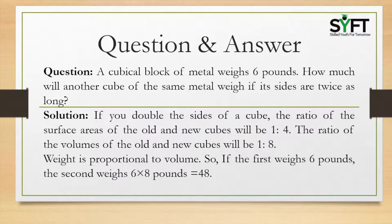Next question: A cubical block of metal weighs 6 pounds. How much will another cube of the same metal weigh if its sides are twice as long? If we double the sides of a cube, the ratio of the surface areas of the old and new cubes will be 1 is to 4, and the ratio of the volumes will be 1 is to 8, because 2 into 2 into 2 equals 8. Since weight is proportional to volume, if the first cube weighs 6 pounds, the second weighs 6 into 8 equal to 48 pounds.